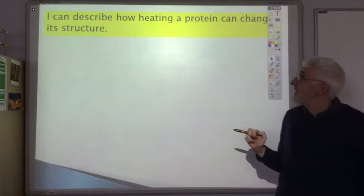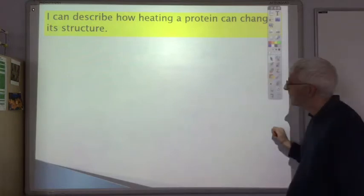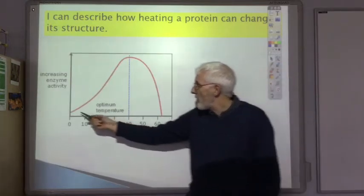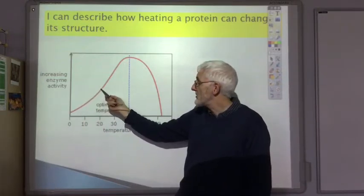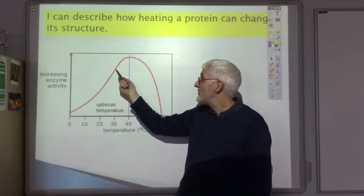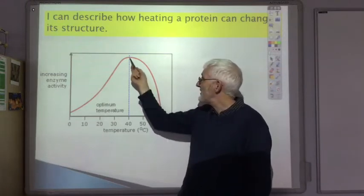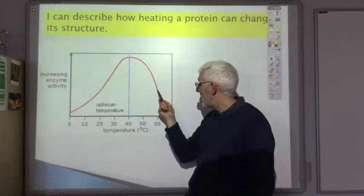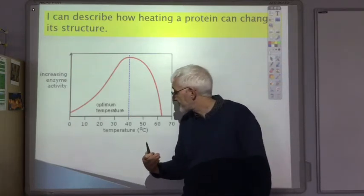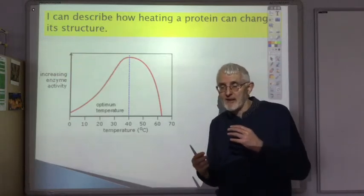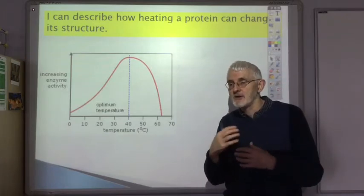We want to look at the effect of heating on the structure of a protein and hence its use as an enzyme. For most chemical reactions, heating speeds things up. But if the reaction involves an enzyme, we get a bell-shaped curve where, after a certain point, the activity of the enzyme decreases — the speed of reaction falls. This is tied to the fact that the enzyme depends on its shape in order to speed up the reaction.